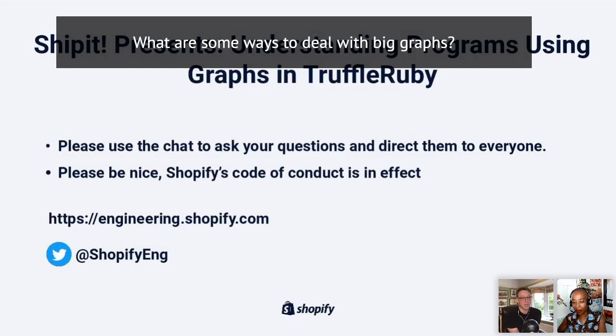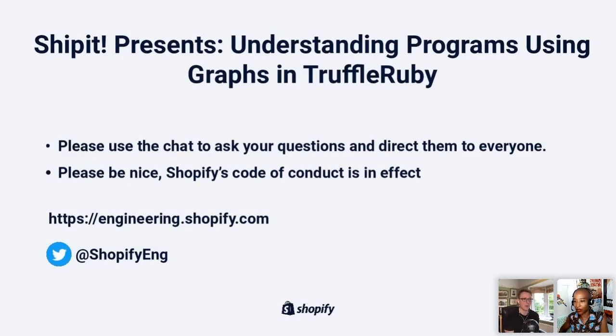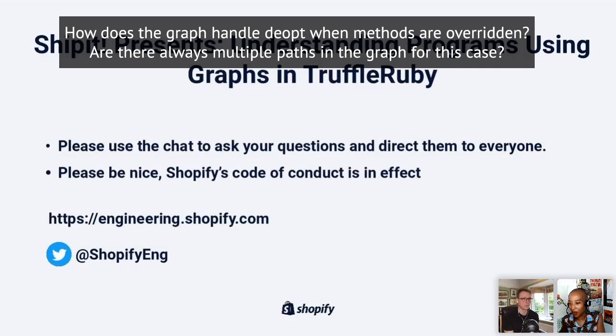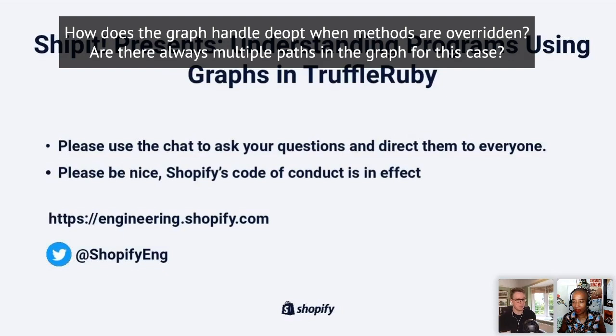How does the graph handle de-opt when methods are overridden? In reality, there are lots of extra nodes I didn't show that maintain meta information about the program. In the second blog post I referenced, it tells you about something called frame states, which is this meta information. That means we can relate certain points in the program back to source code. When you de-optimize, you go and look for the latest piece of meta information and then go to that point in the program. One of the things we've done to make graphs more understandable is remove that meta information when drawing them.